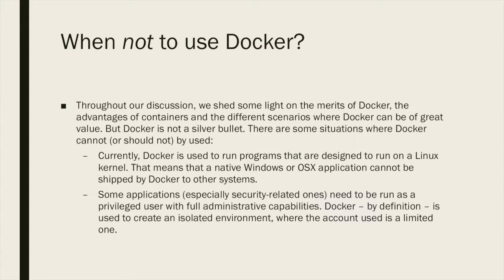Now we've seen when to use Docker — let's look at when not to use Docker. Docker is not a silver bullet; it has its own use cases and sometimes it is not advised or cannot be used. For example, Docker is used to run programs designed to run on a Linux kernel, meaning a native Windows or OS X application cannot be shipped by Docker to other systems. Let's say we have an application written in C# — a web application using ASP.NET — and you want to port it to a Linux or OS X machine using Docker. That cannot be done because Docker depends on the Linux kernel. Maybe in the future it may achieve full cross-OS portability, but currently Docker only works on Linux kernels and only ships applications designed to work on Linux.